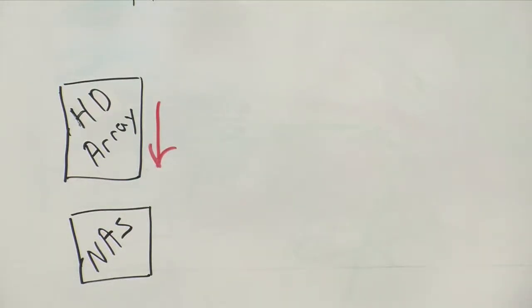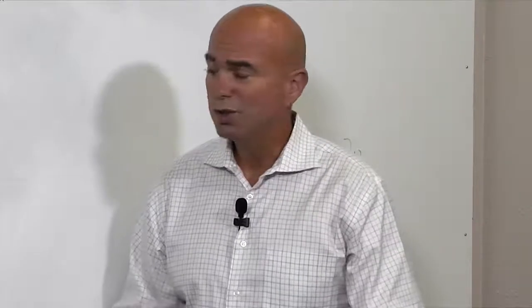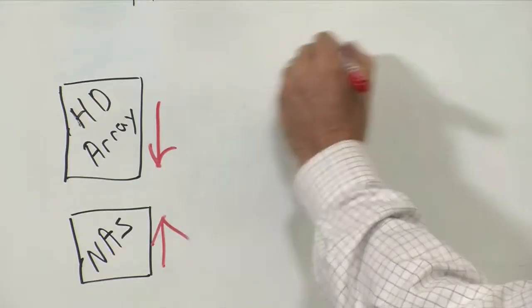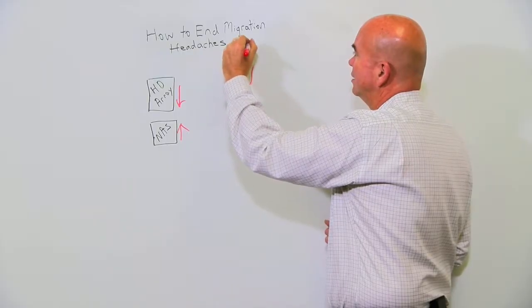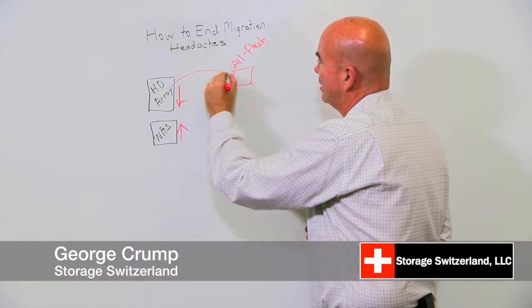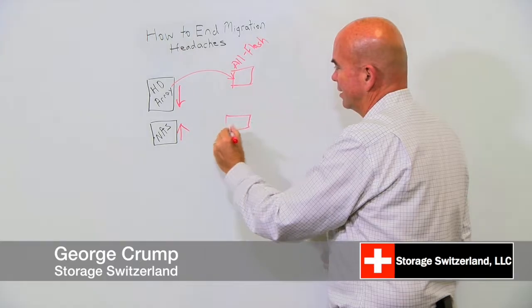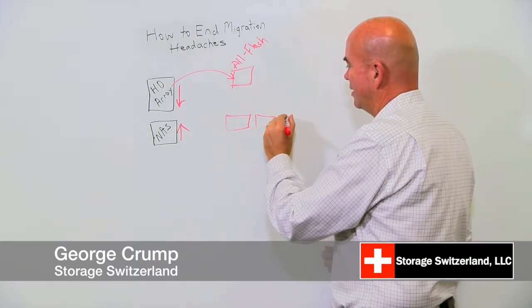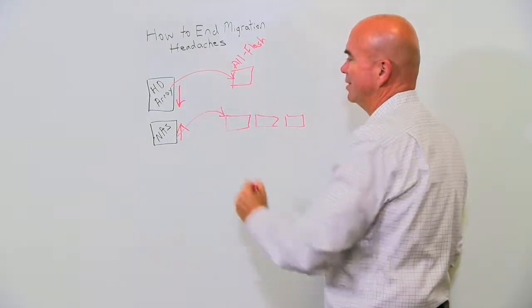If it's a network attached storage system or a file server, you might be out of capacity, and so you need a new system to come in. The typical way to do this today is you'd probably go out and buy an all-flash array and use some sort of utility to do a block copy over. In the NAS world, you might buy a scale-out NAS and again do the same thing — start to copy things over.